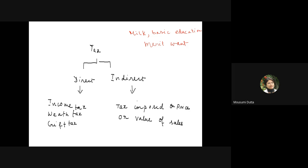Let's start with the introduction to taxation. Taxation is a mechanism by which the government collects revenue from individuals — the individual may be a seller or a buyer. Taxation will be broadly of two types: direct tax and indirect tax.